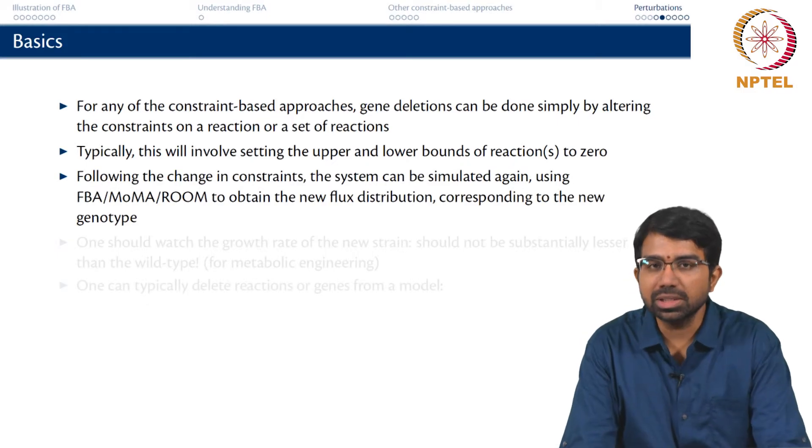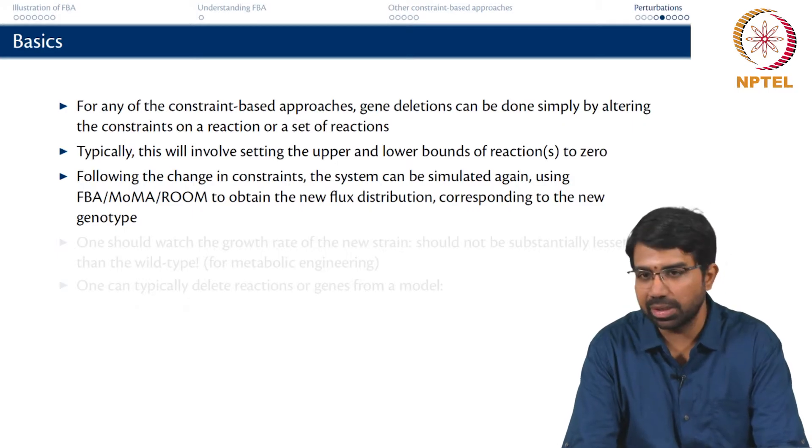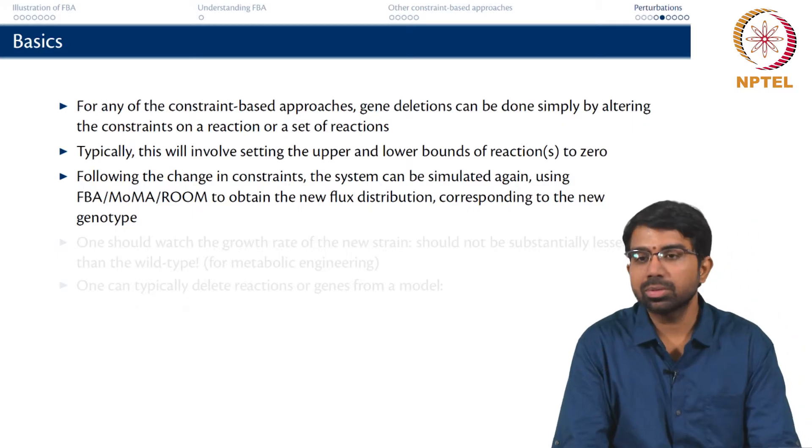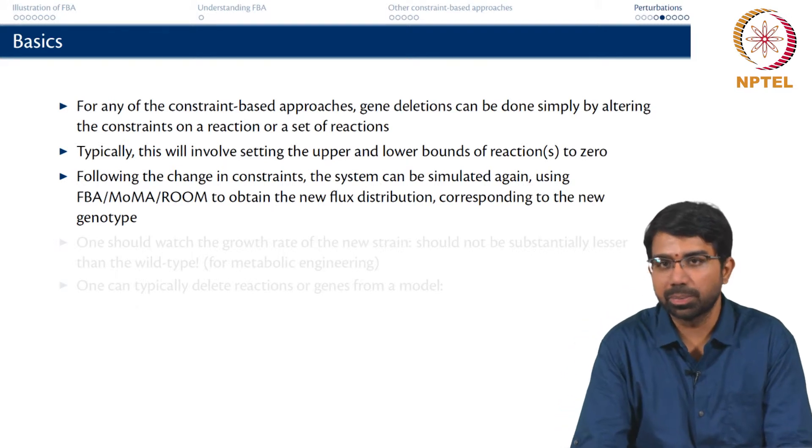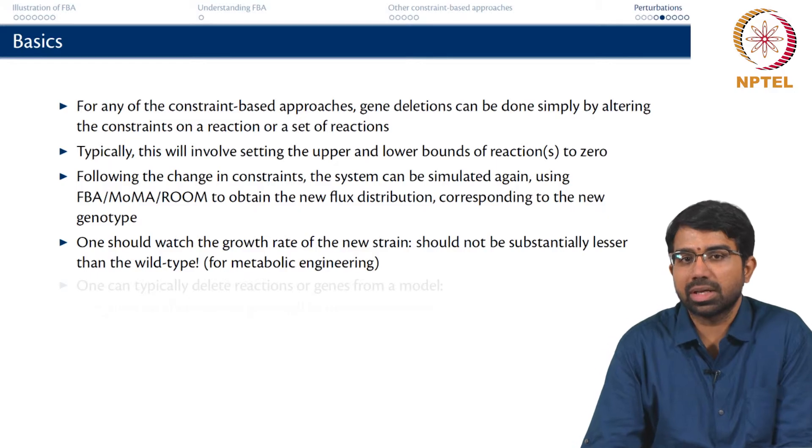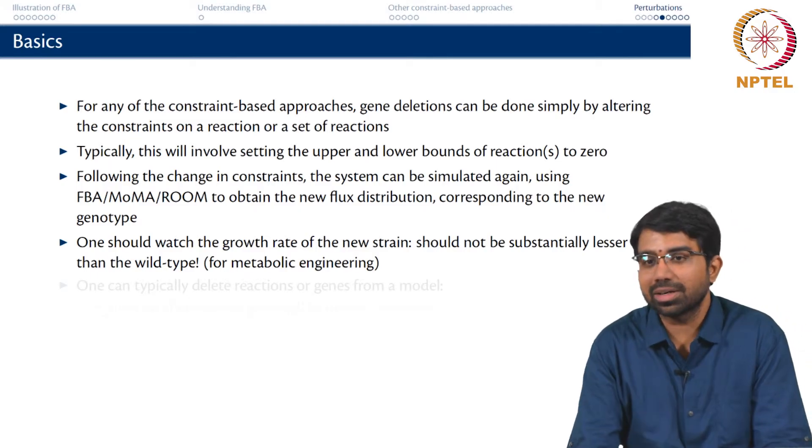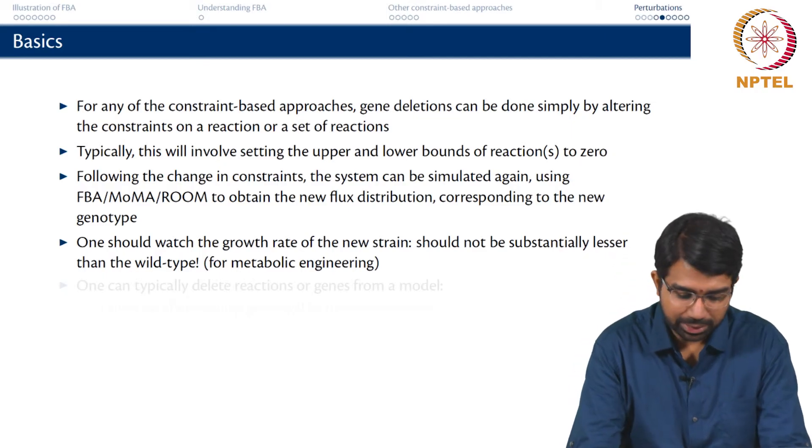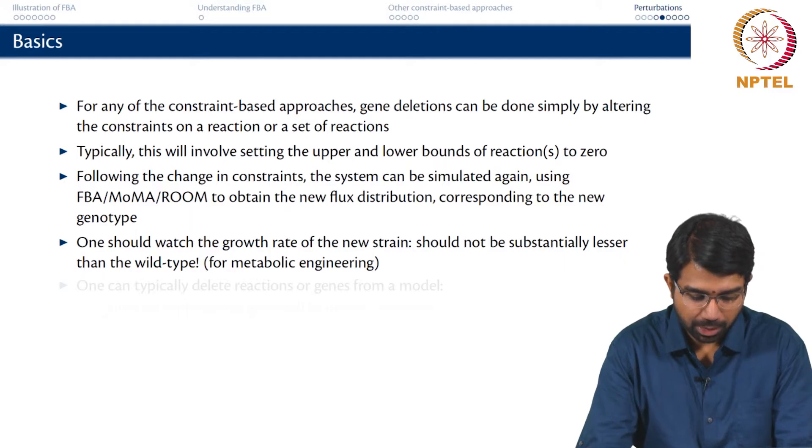Following this change in constraints, you can re-simulate the system using any algorithm of your choice - FBA, MOMA, ROOM, whatever - corresponding to the altered genotype, the perturbed genotype. But you should still watch out for the growth strain, growth of the new strain, especially in case of metabolic engineering. If the growth rate really drops even though you get enough product, it may not be sufficient.